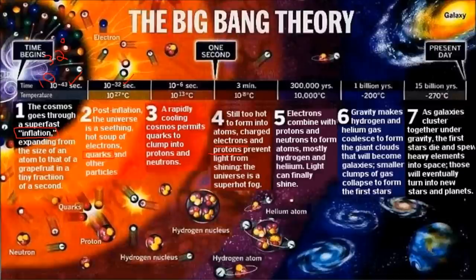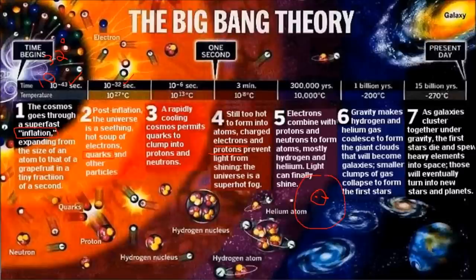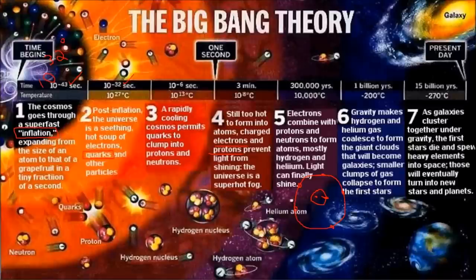The universe was still dark. But after 3 lakh years the first light emerged, called the cosmic microwave background. At this stage, electrons combined with protons and neutrons to form atoms. An atom has a dense nucleus with protons and neutrons surrounded by shells of electrons that keep revolving around the nucleus. So atoms were born, and after a few billion years these atoms started coalescing or combining under the influence of gravity. This coalescence of atoms gave rise to small clumps of matter, which further gave rise to galaxies, and in the end there were billions of galaxies.